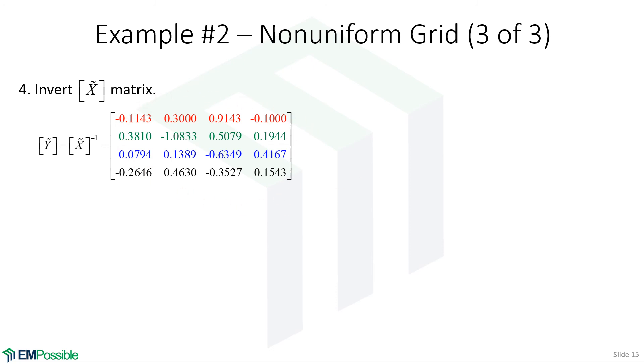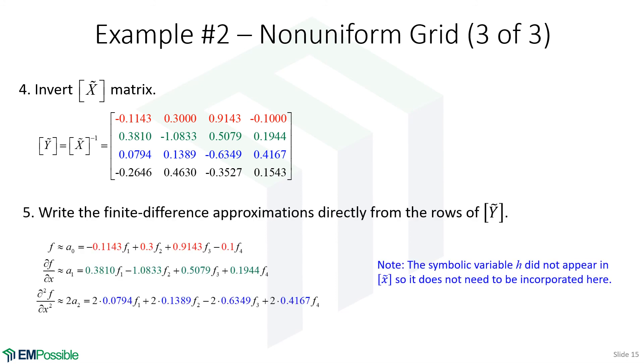Then we invert the X matrix to get the Y matrix. Notice we haven't been carrying around the symbolic H, and that's because we entered our actual x values. We didn't put it in terms of H. We entered fully numerical values from the beginning, so we don't need the H. That's why we're talking about the actual X matrix and actual Y matrix here.